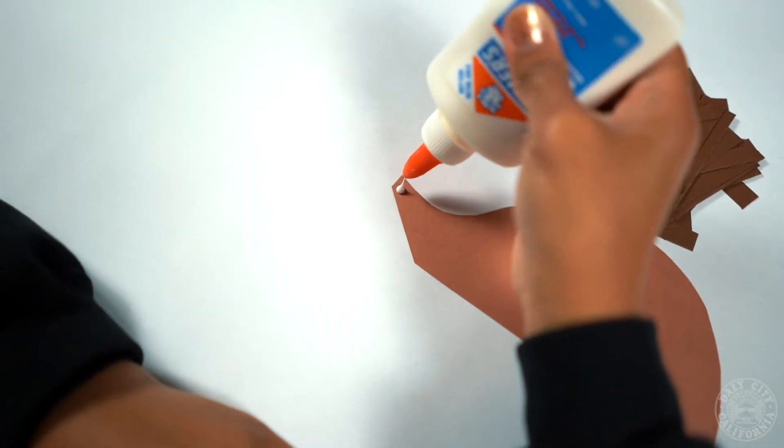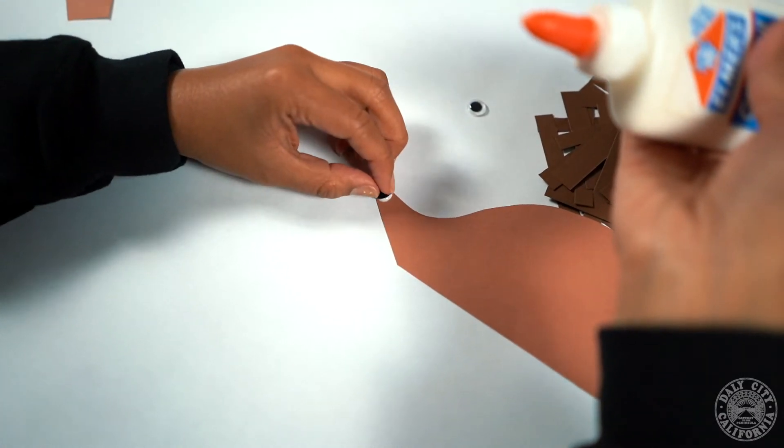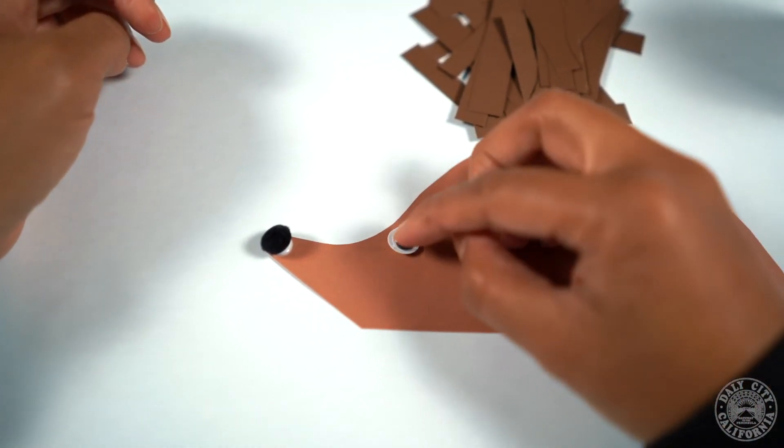Your next step is to glue the black pom-pom at the tip of the body for the nose. After that, you're going to glue the googly eye right behind the pom-pom.